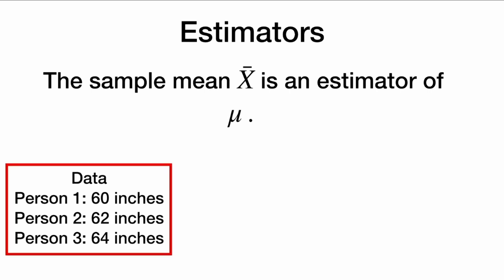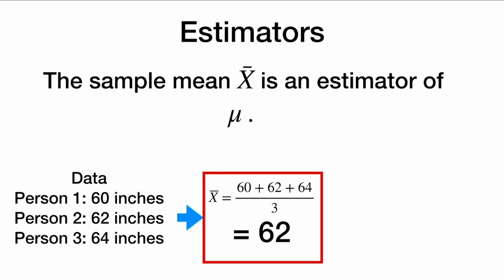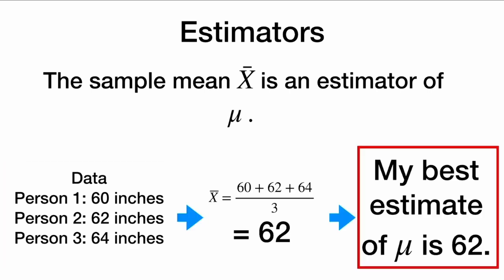For example, if we have data and we have three people, we could average their three heights and say our best estimate of mu is 62, because that was the average of these three people.